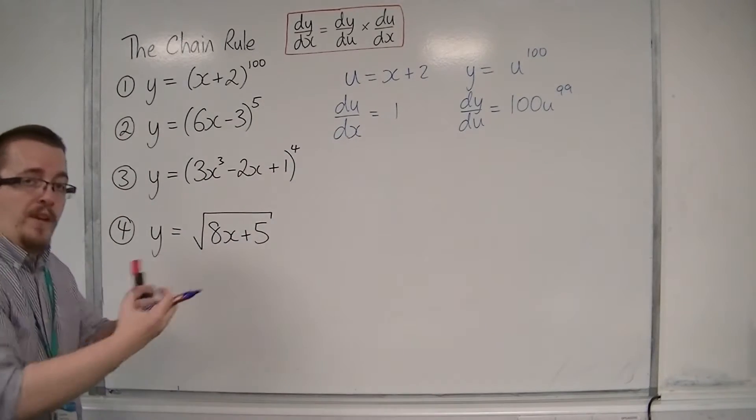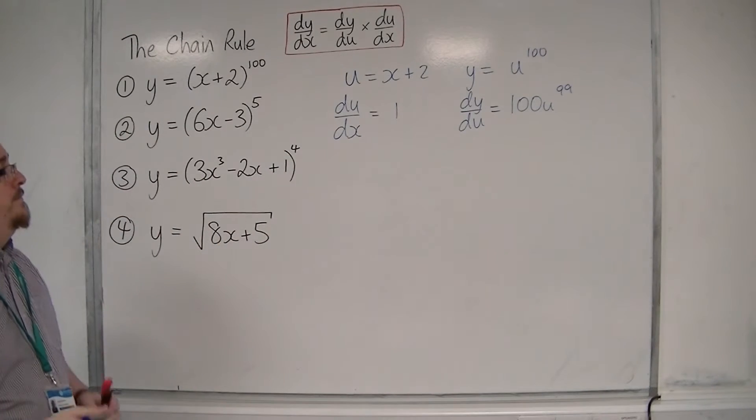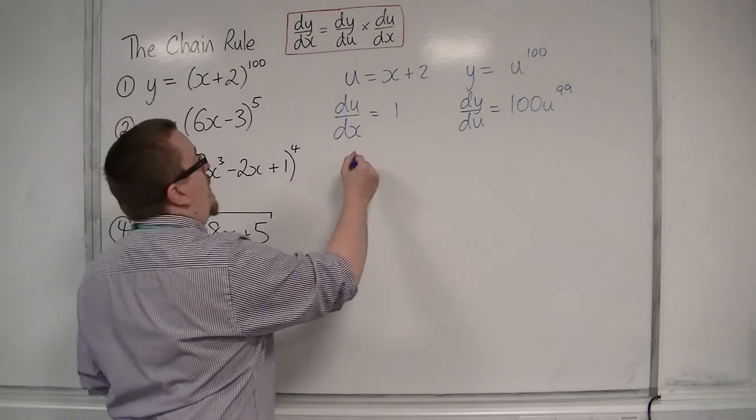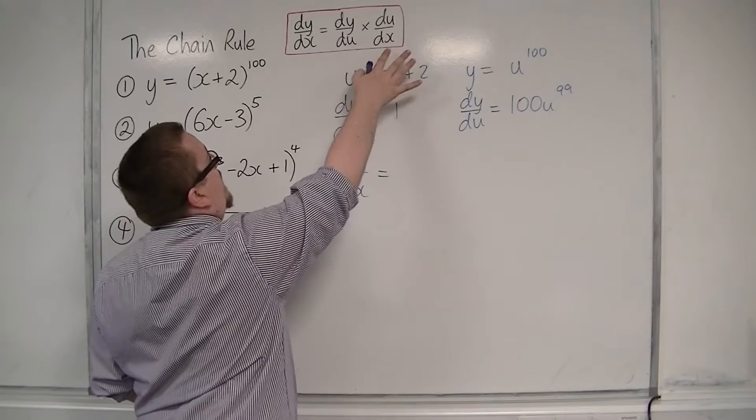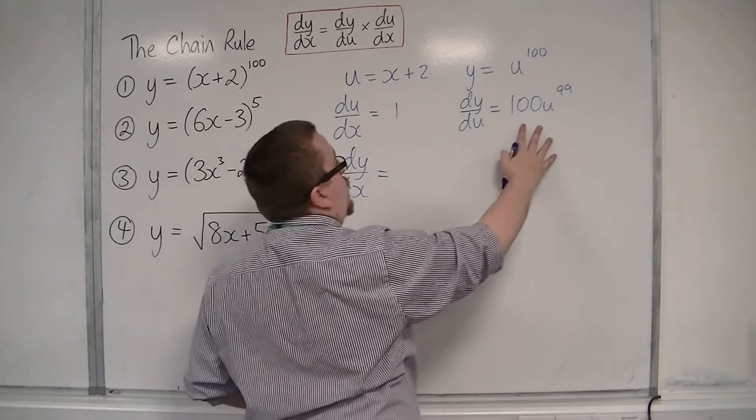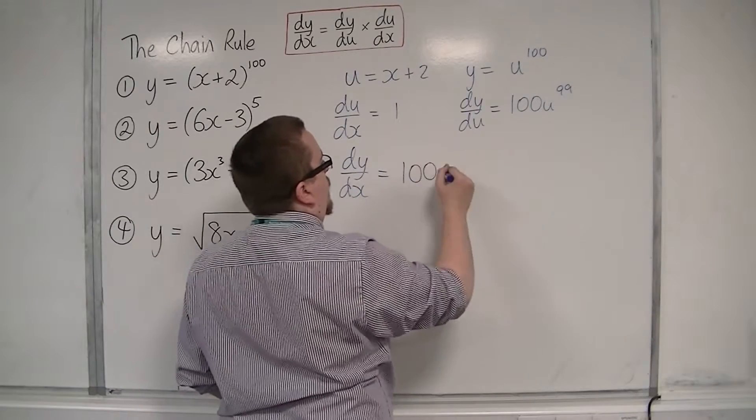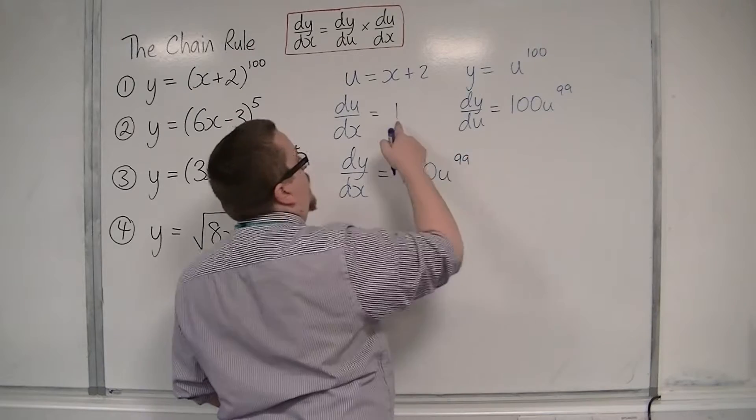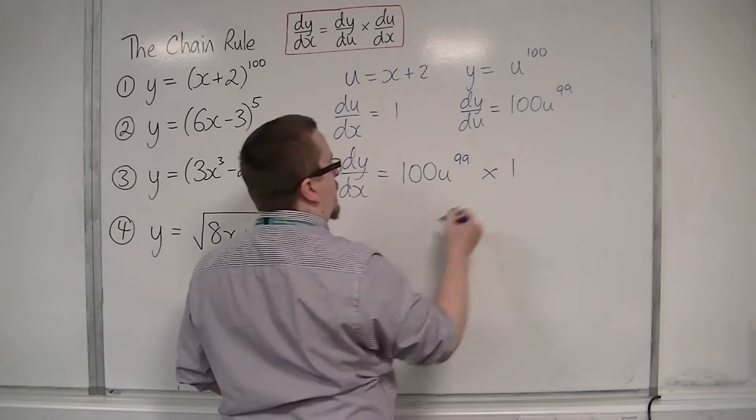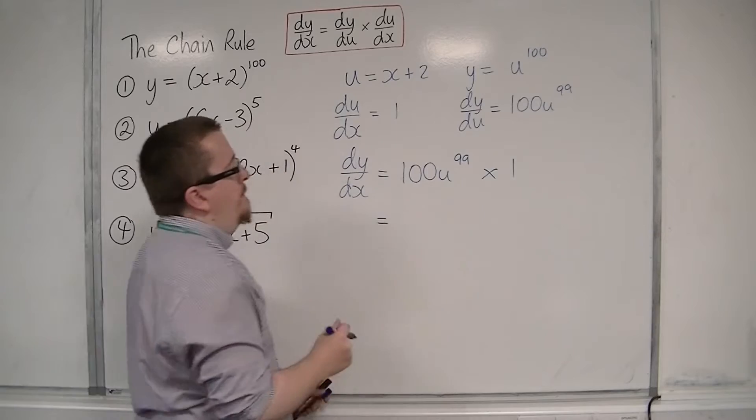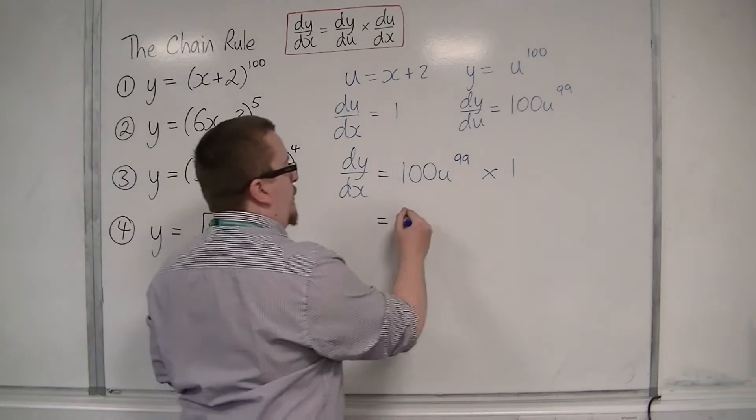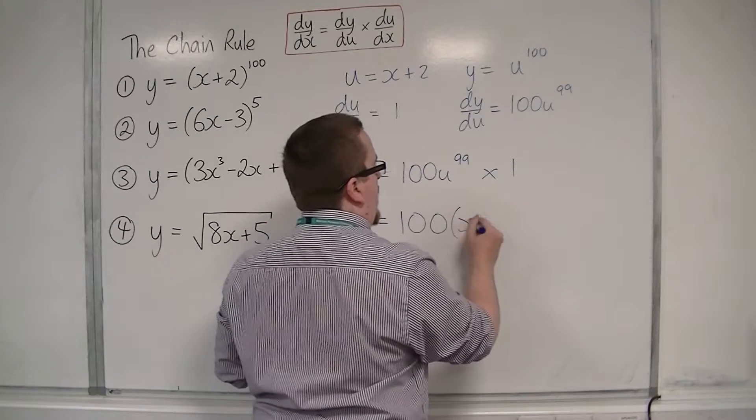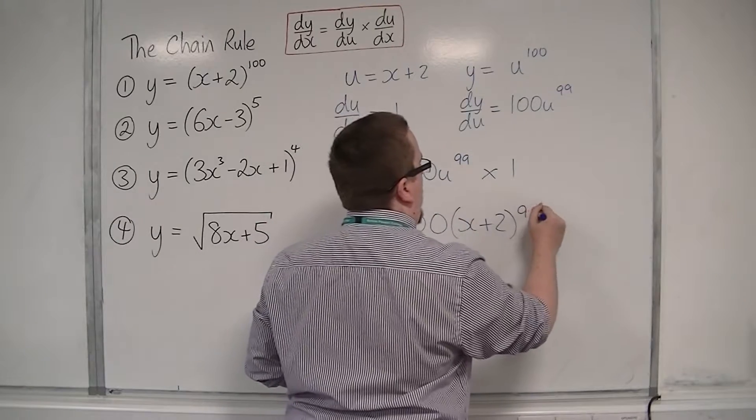The 100 comes down to the front, take 1 off the power. So dy by dx is dy by du times du by dx, so 100u to the 99 times 1. u was x plus 2, so this is 100 times (x plus 2) to the power of 99.